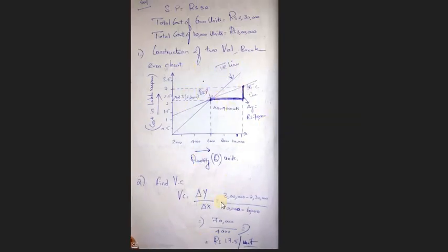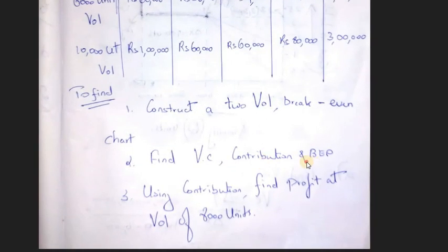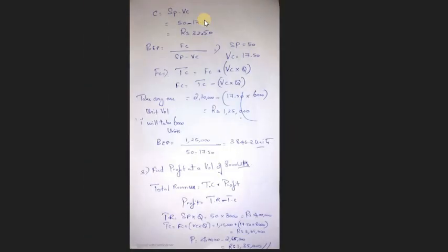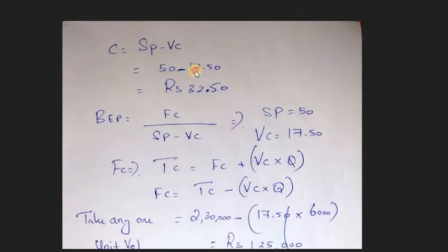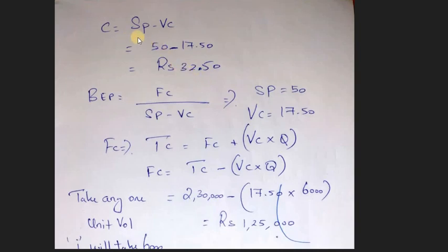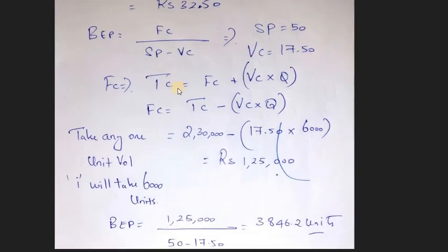Next, what we need to solve is contribution and break-even point. If you look at the contribution, there are formulas in your engineering economics playlist. So if you learn the formula, you can solve the sums. C equals SP minus VC — selling price minus variable cost. Selling price is Rs. 50 minus variable cost Rs. 17.50, so contribution is Rs. 32.50. Break-even point formula is FC divided by (SP minus VC) — fixed cost divided by selling price minus variable cost.